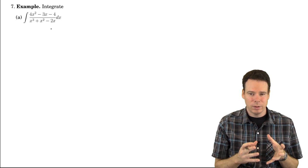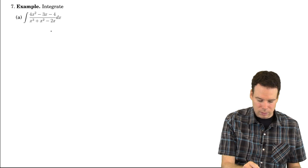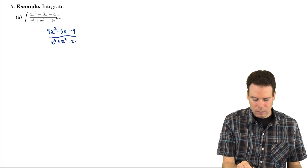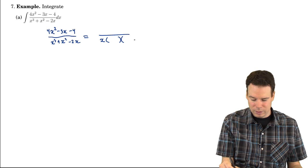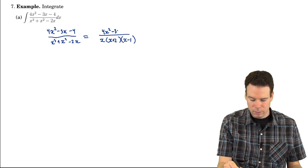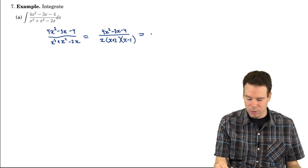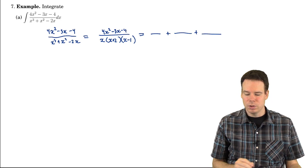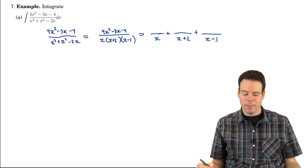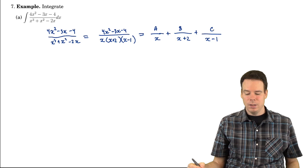I want to integrate this. Our first step is to rewrite it in a way more suitable for integrating. We factor the denominator: there's an x, and then x² plus x minus 2, which factors as (x plus 2)(x minus 1). My goal is to break the integrand into terms whose sum is the original function. The denominators must have least common multiple of x(x plus 2)(x minus 1), so the terms are A over x, B over (x plus 2), and C over (x minus 1).